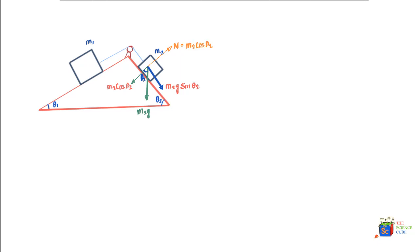Likewise, we label all forces acting on mass M1. It has M1G acting downward, with a horizontal component and a vertical component. Since the angle is theta1, the component along the plane is M1G sine theta1, and the perpendicular component is M1G cosine theta1. The normal reaction here equals M1G cosine theta1 because this mass is also not moving along the y-axis, so the two forces are equal.